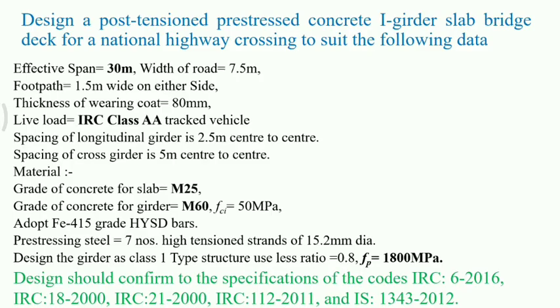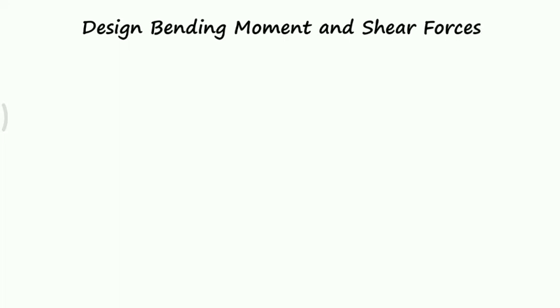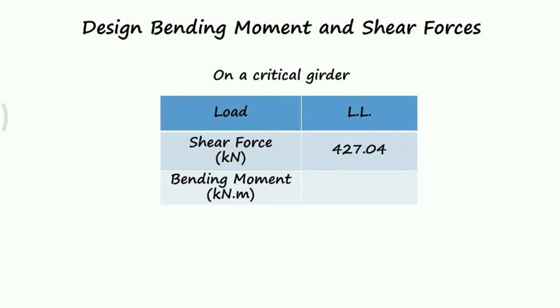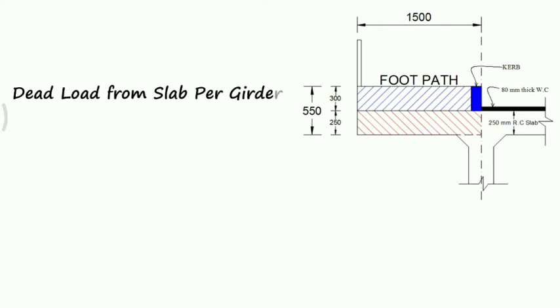This is the problem which we have already started in Lecture 1. This is the cross section of the bridge. In the previous lecture, we obtained the design bending moment and shear forces on a critical girder due to live load. Now we will obtain the bending moment due to dead load — from the slab per girder as well as the dead load of the girder — to get the maximum bending moment and shear forces.